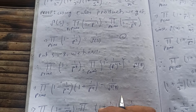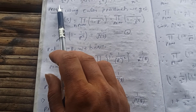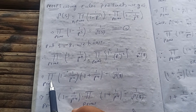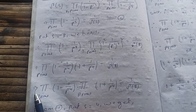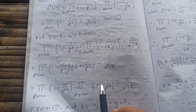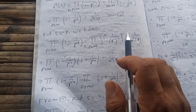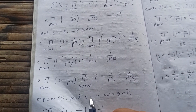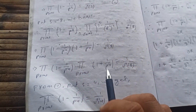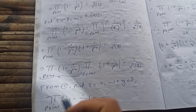Since both factors are positive, we can split the product: the product over primes of (1 − 1/P⁴) times the product over primes of (1 + 1/P⁴) equals 1/ζ(8). Now from equation 1, putting s = 4, we get that the product over primes of (1 − 1/P⁴) equals 1/ζ(4). This is exactly the first factor.